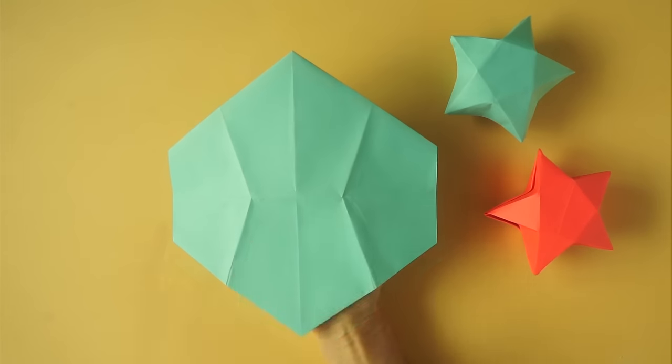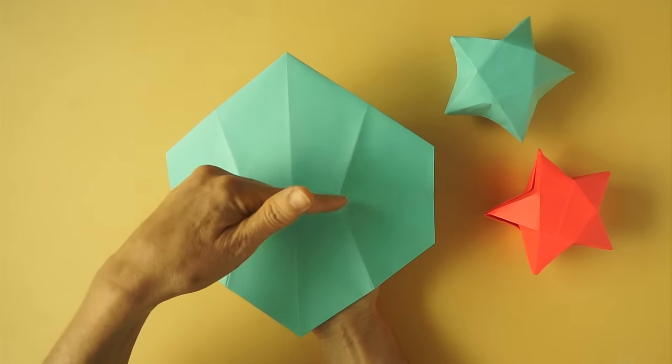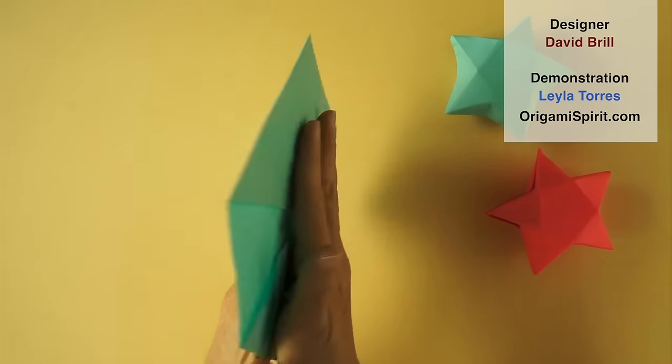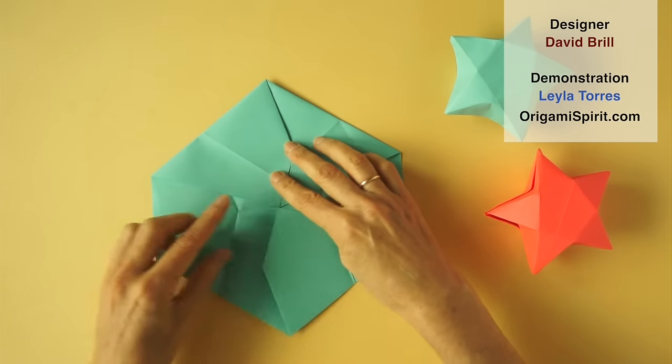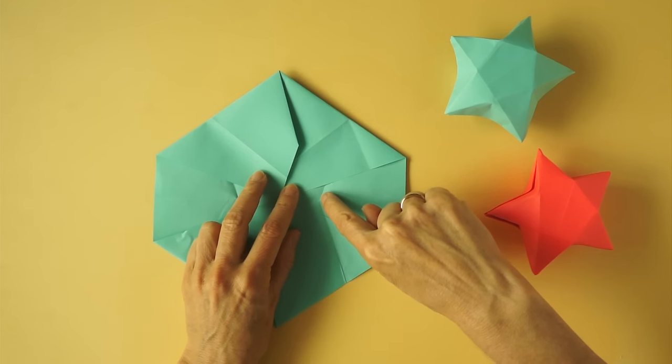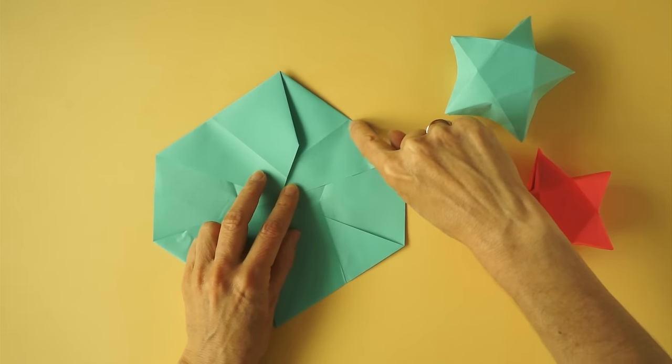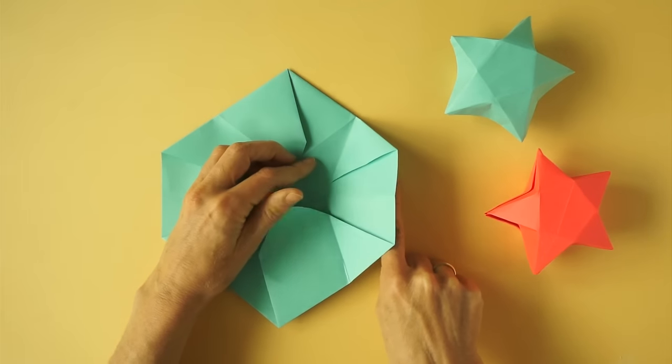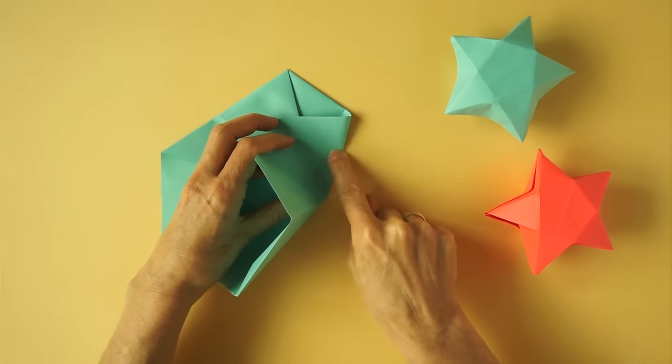If we turn it over, we notice that there are two perfect pentagons, a lower one and an upper one. We turn this over and we are going to make sure we see those pentagons on this side. So we are going to reinforce along here. We follow a fold that we already have there.